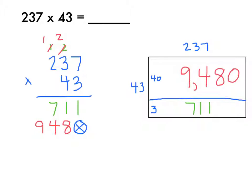And so now I'm ready to add these two together. I'm going to get 1 plus 0 is 1, 1 plus 8 is 9, 7 plus 4 is 11, and 1 plus 9 is 10. And then I'm going to put in my comma. And my final answer is 10,191.